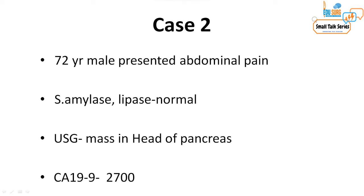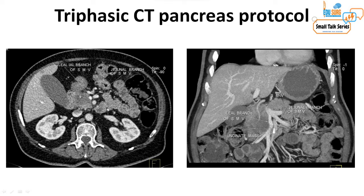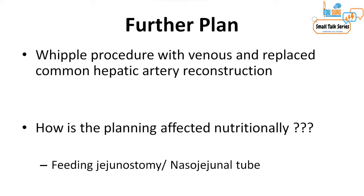Case two is a 72-year-old male presenting with abdominal pain. Amylase and lipase were normal, ultrasound showed a mass in the head of the pancreas, and CA 19-9 was 2,700. This patient had a pancreatic head mass requiring vascular reconstruction. He was given neoadjuvant chemoradiotherapy and after downstaging was planned for a Whipple procedure with venous and common hepatic artery replacement reconstruction.